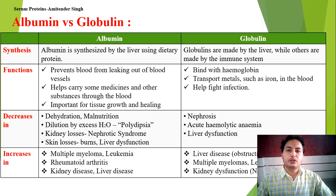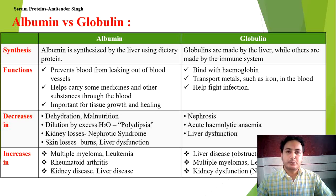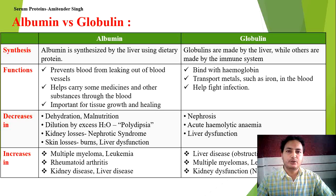In which conditions is albumin low? Albumin decreases in malnutrition and inadequate protein intake, dehydration or dilution by excess water, polydipsia, kidney losses such as nephrotic syndrome — where nephrons start filtering albumin and excreting it in urine.